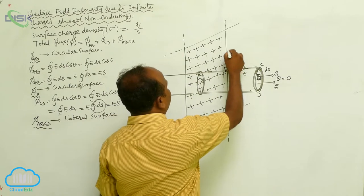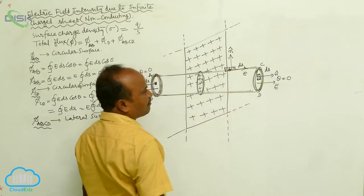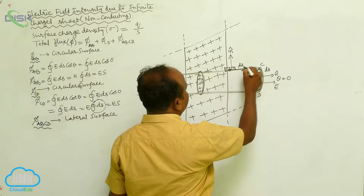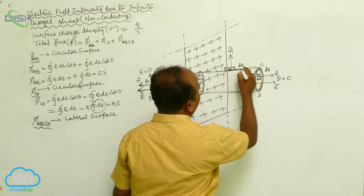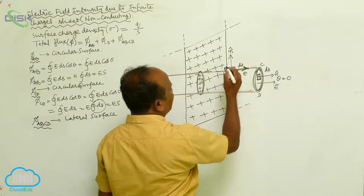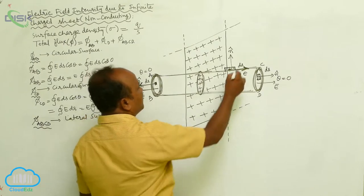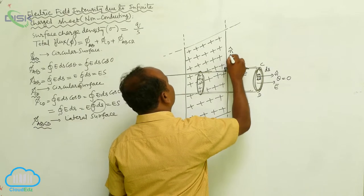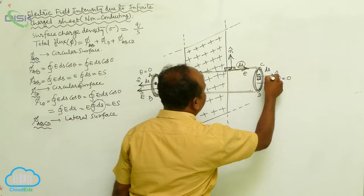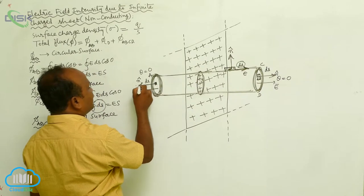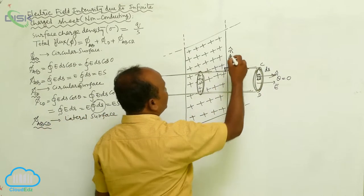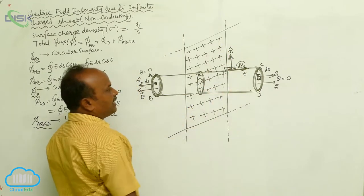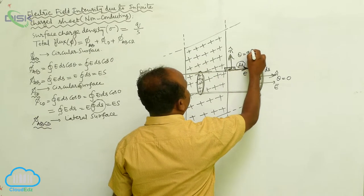The area vector is perpendicular to the area, represented as n-cap. On the lateral surface, the electric field intensity is outward. The area vector is perpendicular to the area element dS. In this case, the electric field intensity is perpendicular to the area vector, so theta equals 90 degrees.